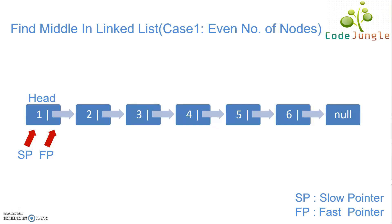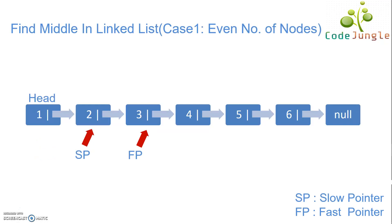If the condition is true, we increment slow pointer by 1 and fast pointer by 2. In the first iteration, fast pointer points to node 1. Since neither fast pointer is null nor fast pointer's next is null, we increment: slow pointer moves to node 2 and fast pointer moves to node 3. In the next iteration, fast pointer's next is node 4 — also not null — so we increment again: slow pointer moves to node 3 and fast pointer moves to node 5.